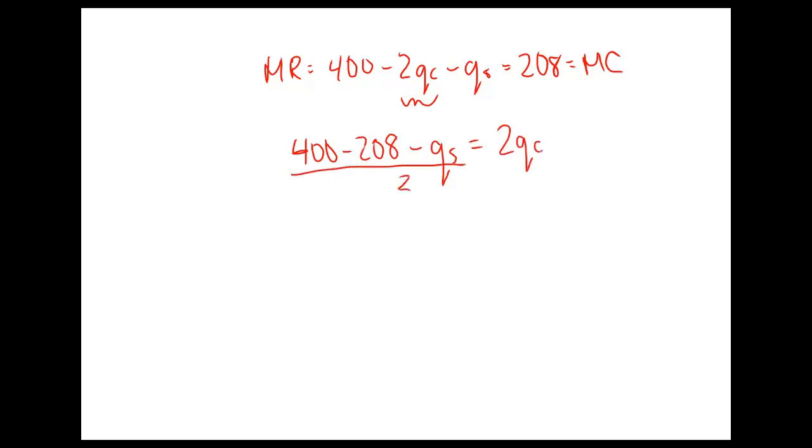If we simplify that, we have 96 minus QS equals 2QC. We want to isolate for QC. We have eliminated P from this equation, which is what we wanted to do. We'll do 400 minus 208, leave the QS here, and put the 2QC over to the right. Then this whole expression is divided by 2 to eliminate the 2s. I'm going to put QC on the left now and simplify. So 400 minus 208 divided by 2 gives us 96, and then we have minus one-half QS. So this is Canada Air's best response function.